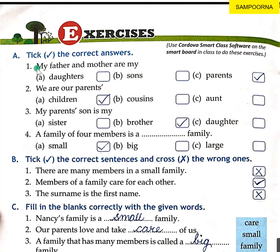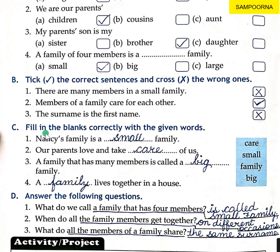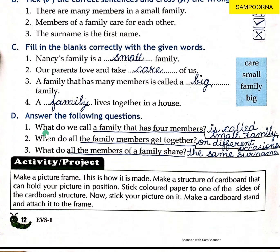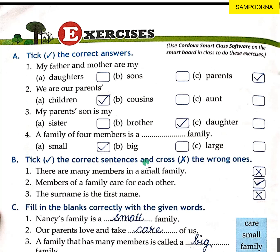Students, Exercise A — you fill in your book on page number 12. Exercise B: tick the correct sentences and cross the wrong ones. Number one: there are many members in a small family — cross, because only three or four members are in a small family. Number two: members of a family care for each other — yes, this is correct. Number three: the surname is the first name — no, it is the last name, so it will be crossed.